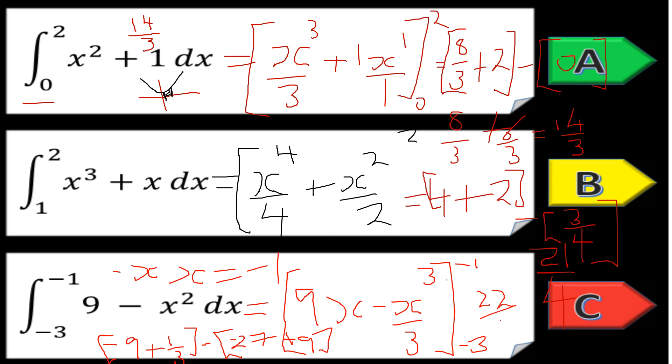That is my final answer. This is integration between limits: we add one to the power and divide by the new power, then substitute in the top limit minus the substitution of the bottom limit, and then evaluate.